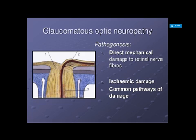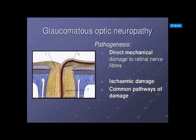Glaucoma affects the optic nerve, known as glaucomatous optic neuropathy. There can be direct mechanical damage to the retinal nerve fibers, or damage and compression of blood vessels supplying the optic disc, known as ischemic damage. These two mechanisms — direct mechanical and ischemic — can both result in decreased delivery of nutrients to axons and decreased outflow of metabolic products.